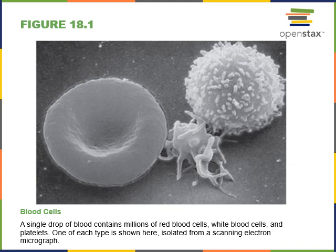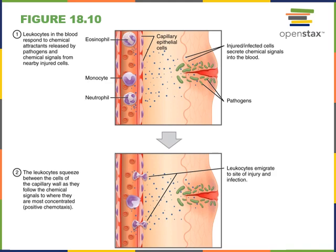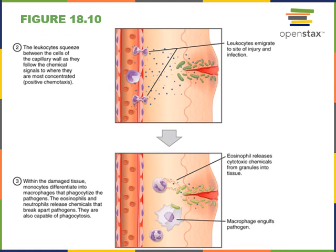Leukocytes are important for defending against infection, and we'll study them in more detail when we study the lymphatic and immune system. In response to an injury, when pathogens invade a tissue, leukocytes are attracted to the injury and can migrate from the blood into the injured tissue, where they bind to pathogens. Some types of leukocytes can perform phagocytosis — for example, the macrophage seen here is engulfing the pathogen to destroy it. An eosinophil contains cytoplasmic granules filled with cytotoxic chemicals that kill the pathogen to defend against infection.